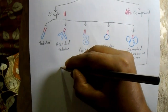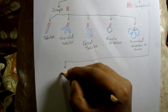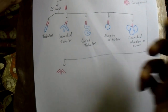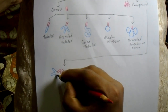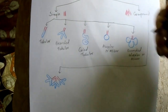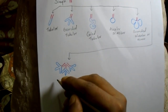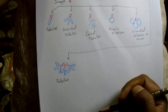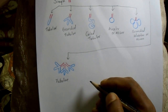Now let's draw the subdivisions of compound glands. In compound glands, there is branching in the duct. The first subtype has a branched duct and the secretory portion is tubular in shape. This is called the compound tubular gland. This type is present in the submucosal mucous glands of Brunner in the duodenum.